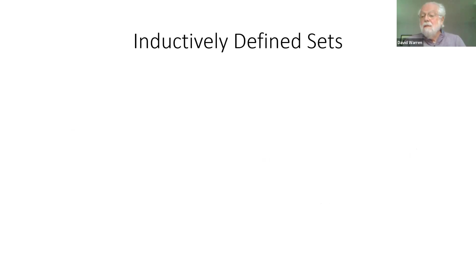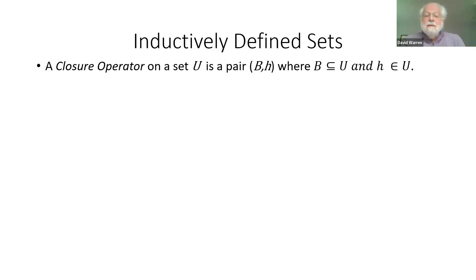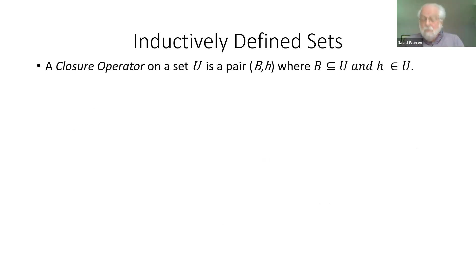What are these things really about mathematically? We want to define a closure operator on a set U — the universal set of things. A closure operator is a pair where the first element is a subset of U, and the second is an element of U. That's called a closure operator.